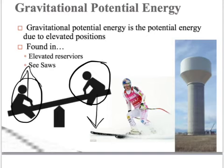A skier is another great example. At the top of the mountain, you have quite a bit of gravitational potential energy — if you didn't, you wouldn't slide down the hill. That's why it's harder to ski uphill; you lack that gravitational potential energy. When you're at the very top of the hill, you have a lot of potential to accelerate down the mountain, so you're able to slide down on your skis.